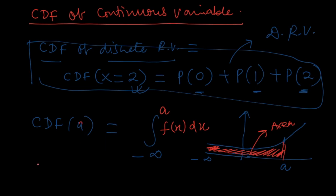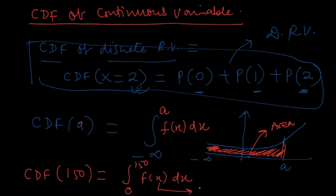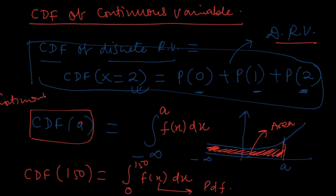For example, to calculate the CDF of weight 150 lb, and if the weight distribution starts from 0, the CDF is the integral of f(x)dx from 0 to 150. For continuous random variables, the CDF is the area to the left of that particular point including that point, and that area represents the probability.